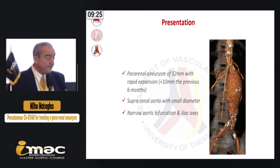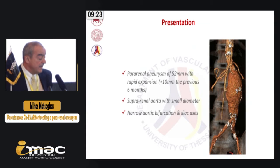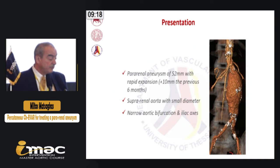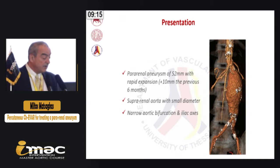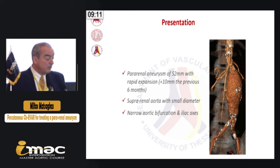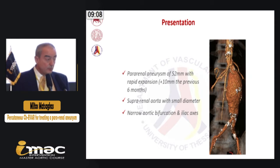He was a very thin man, 55 kilograms, and he had a pararenal aneurysm of 52 millimeters with rapid expansion over the previous six months. The suprarenal aorta had quite a small diameter, and he also had a narrow aortic bifurcation and narrow iliac arteries.